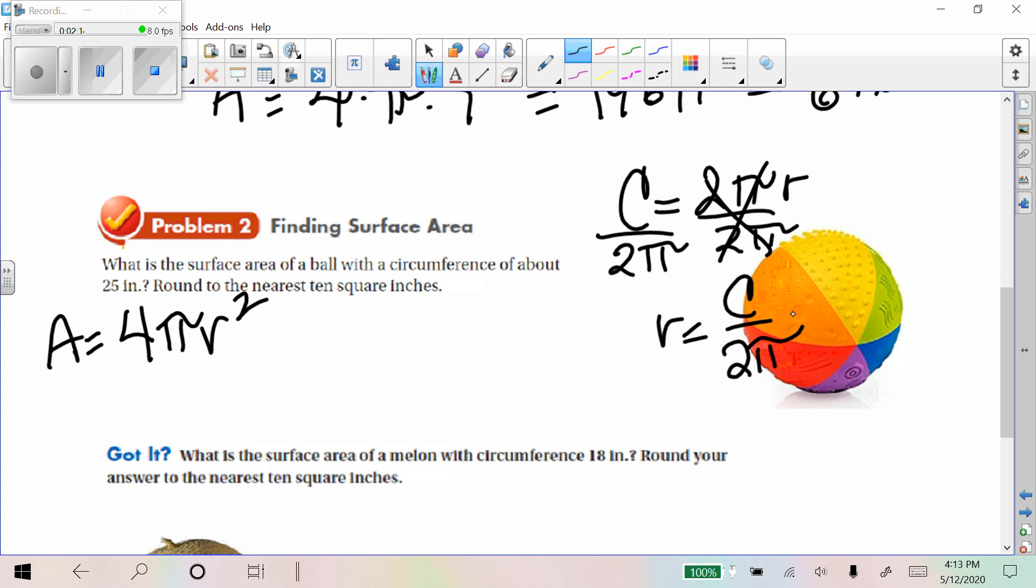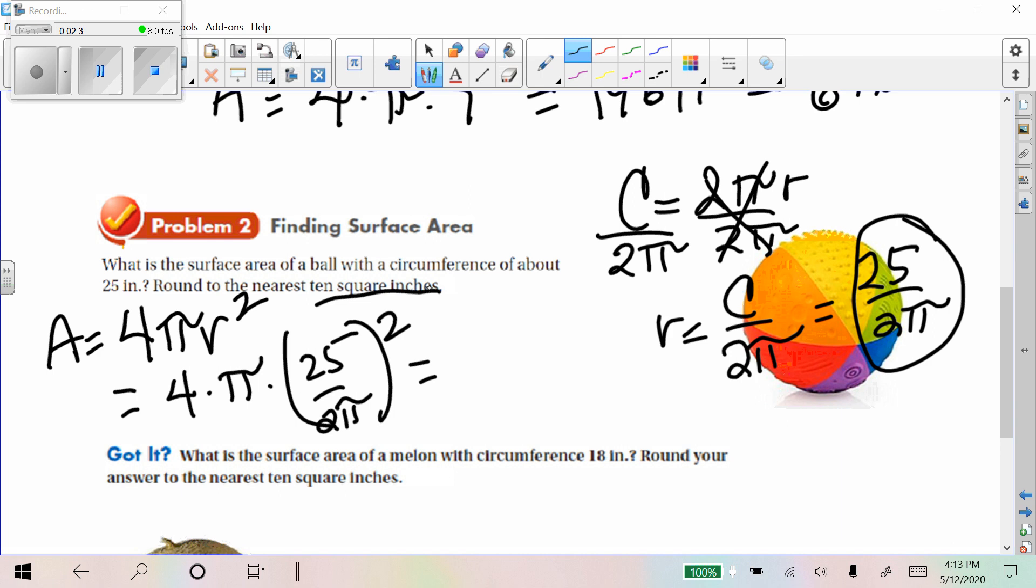So let's take 25 and substitute it for C, 25 divided by 2 pi. And we're going to use that for our radius. So our area is 4 times pi times 25 divided by 2 pi squared. And we need to round to the nearest square inches. So I'm just going to enter that into my calculator and see what it gives. And my calculator is telling me that's about 200 approximately.